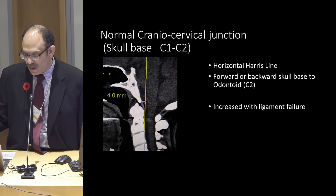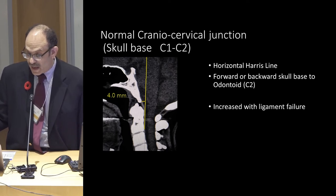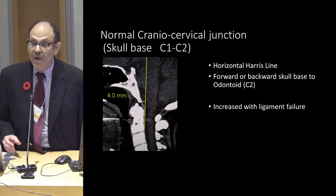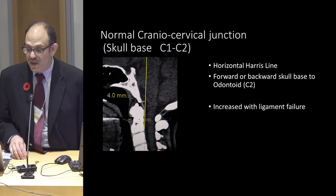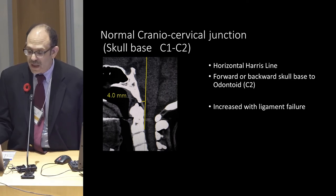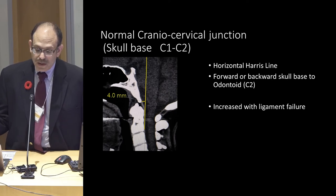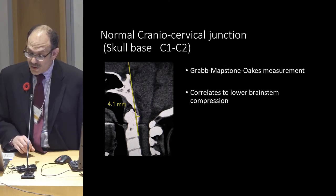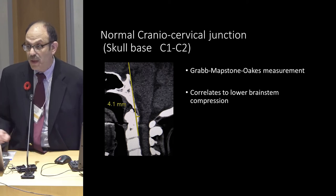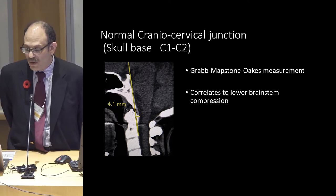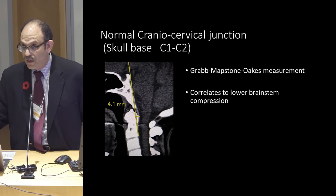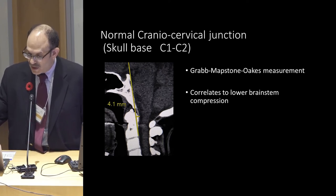One measurement is called the clivo-axial angle — it measures the angle between the base of the skull and the back of C1 or the odontoid. Another measurement is called the horizontal Harris measurement, which indicates how far forward or back the odontoid is from the foramen magnum — an indication of how far the skull is sliding on top of C1. A third measurement is the Grabb-Mapstone-Oakes measurement, suggestive of how much tissue is likely to be pushing on the brainstem. Frequently all three are wrong together.